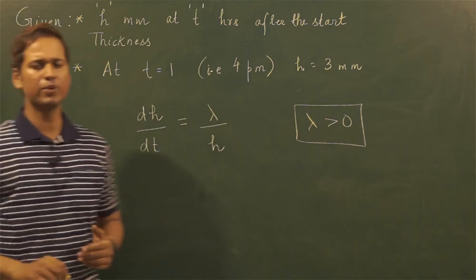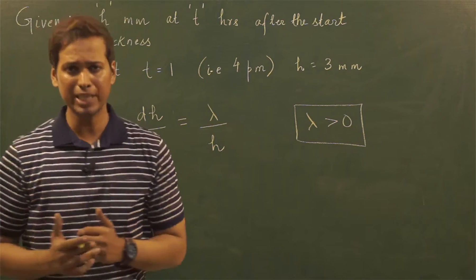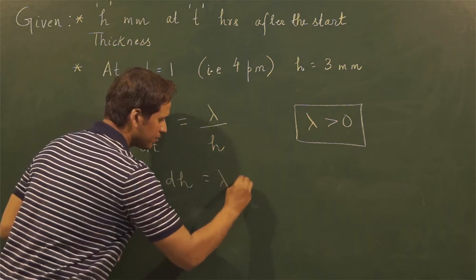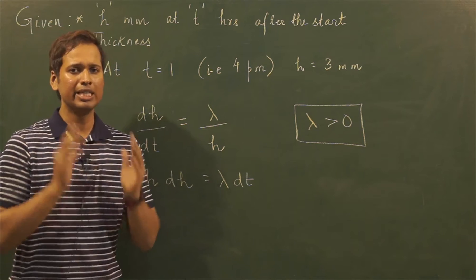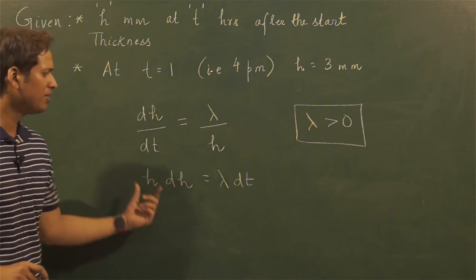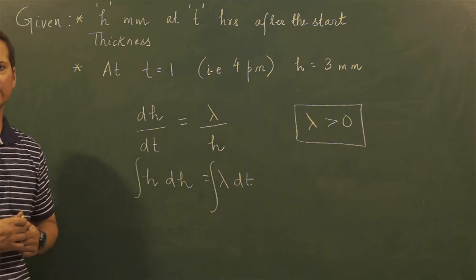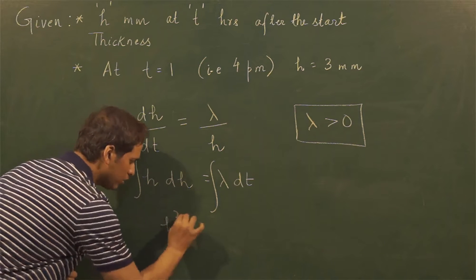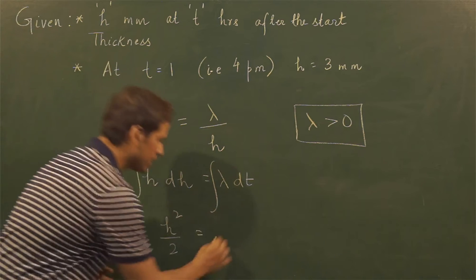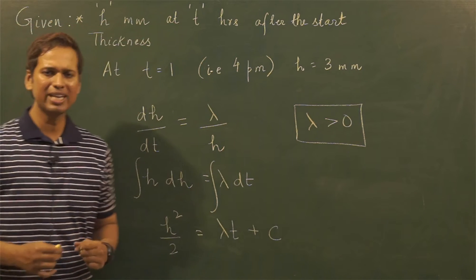To solve this differential equation I'll use the variable separable method, grouping h with dh on one side and dt on the other side. Bringing h across gives h dh = λ dt. Please ensure that while grouping, the dh and dt terms should always be in the numerator. Having separated the variables, I can now integrate both sides. The integration of h with respect to dh gives h²/2, and integrating λ dt gives λt. Adding a constant of integration c, we get h²/2 = λt + c.